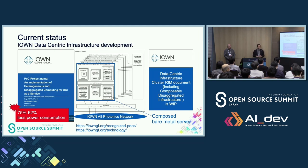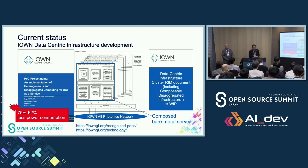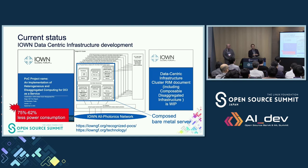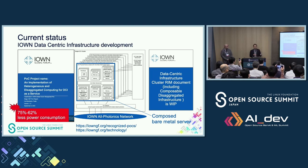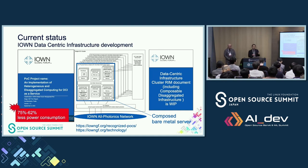So let's start with a question: how many of you are familiar with the IWON data-centric infrastructure? For those who want more detail, we have posted several documents on the IWON Global Forum site covering the functional architecture of the data-centric infrastructure. You can get our public document at the URL listed at the bottom of the slide. Additionally, NTT and Fujitsu published the IWON POC report last year, showing that this architecture concept already achieved a 62% reduction in power consumption compared to the conventional code server.